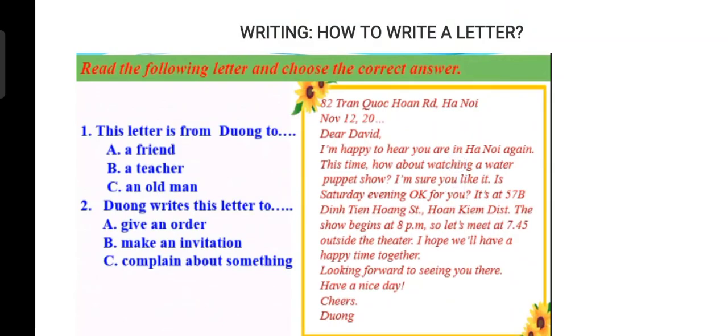First, number one. This letter is from Dương to: A, a friend; B, a teacher; C, an old man. And we choose A — a friend. We see in the letter, Dương writes an informal letter of invitation.